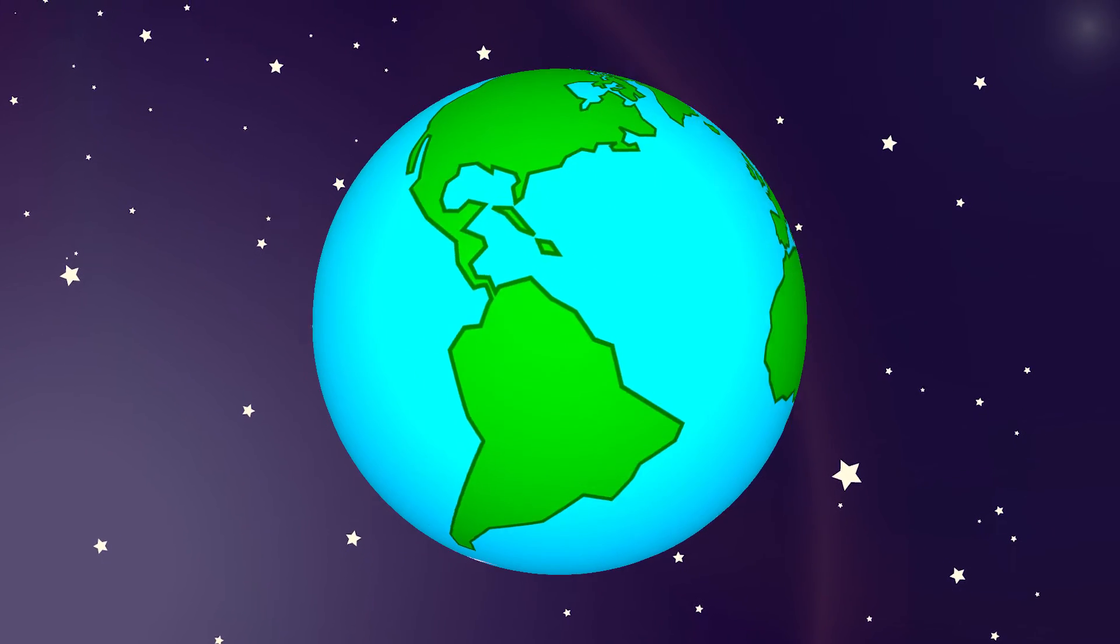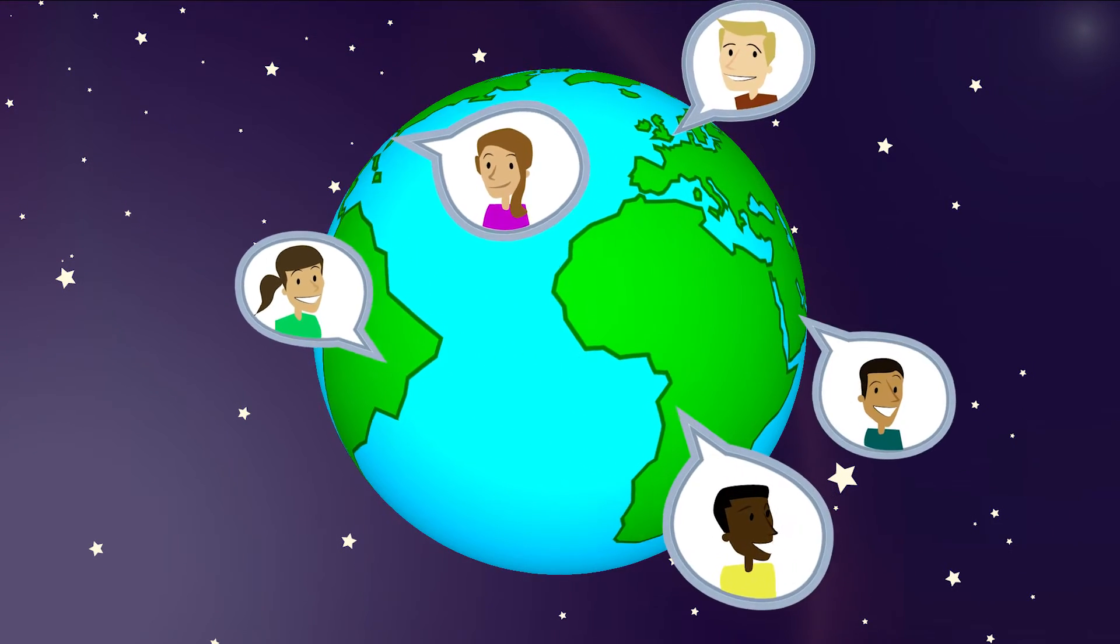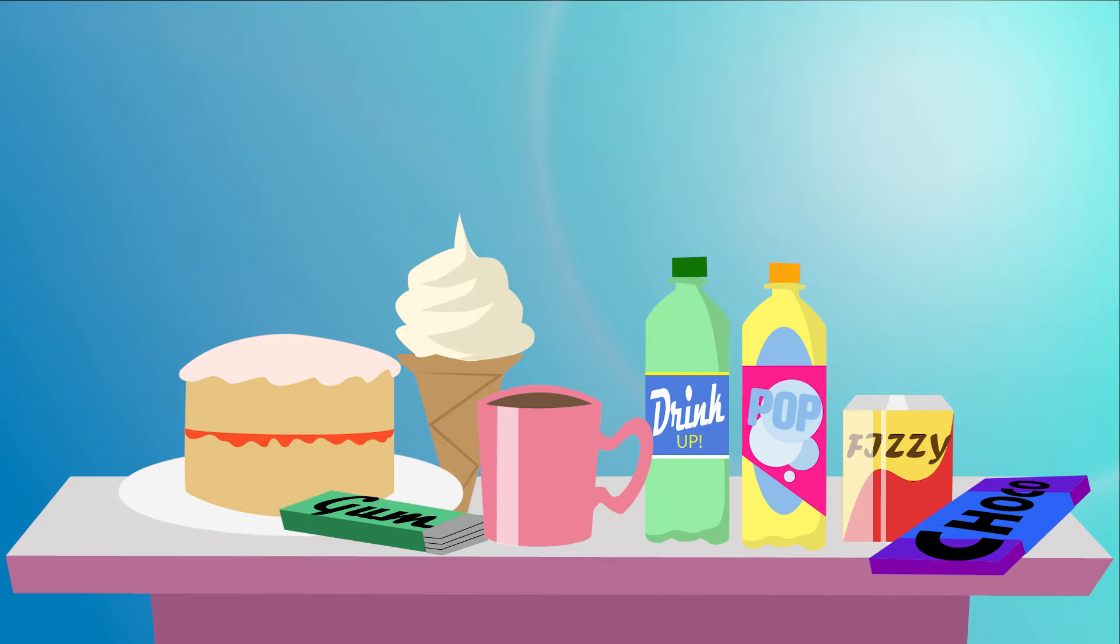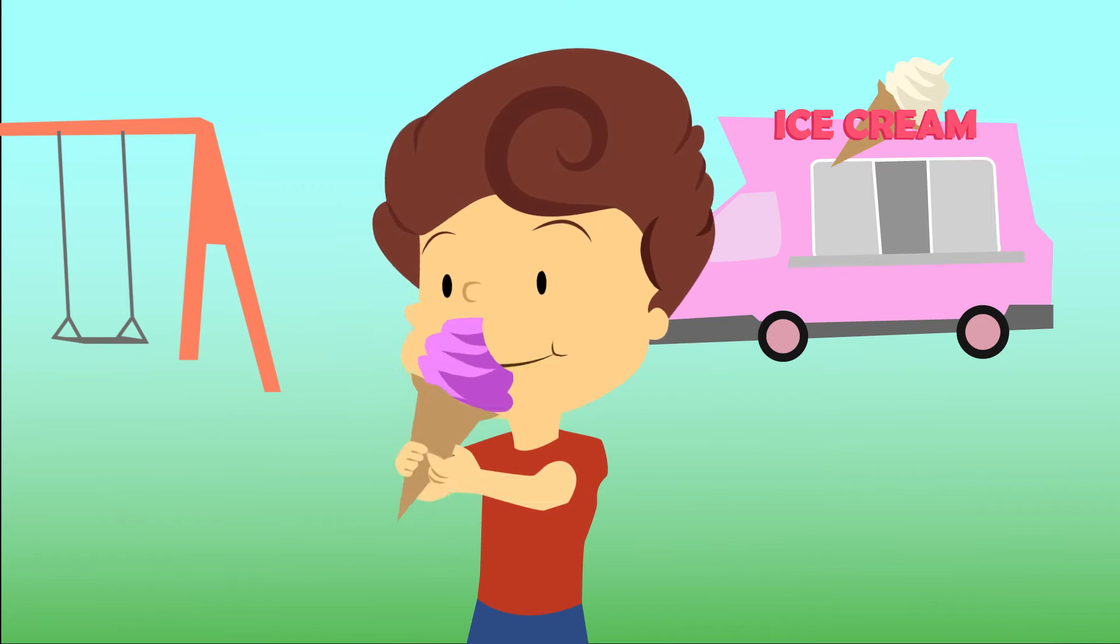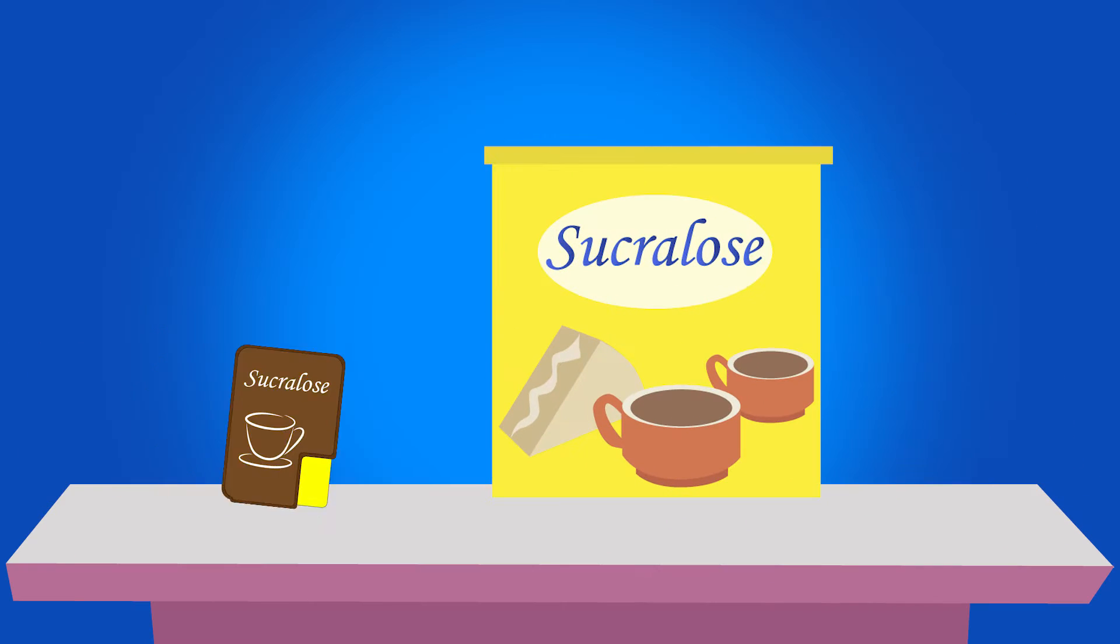The sweetener sucralose is used by millions of people around the world. It's used in all sorts of different food and drinks and is loved for its sweet taste with no calories. You probably know it best from its familiar yellow packet.